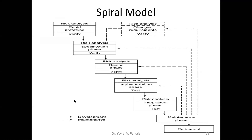This is the diagram of the spiral model. Observe carefully — it is a combination of two types of models: the rapid prototype model and the waterfall model. In the waterfall model, a product is designed according to phases — requirement, specification, design, implementation, integration, maintenance, and retirement. The product is ready only after completion of all phases.